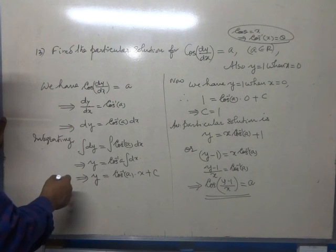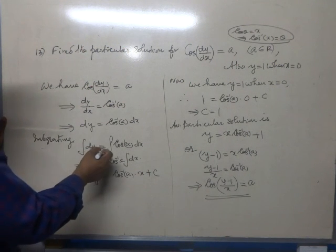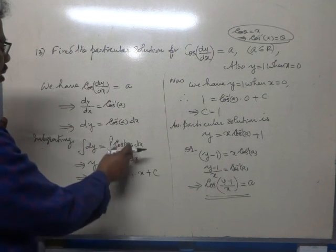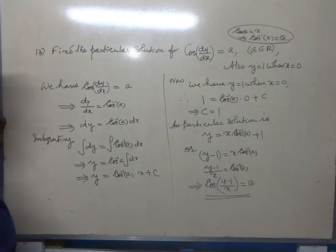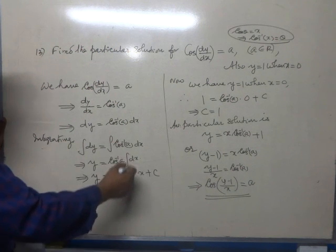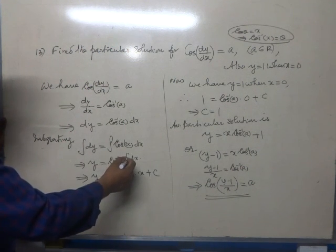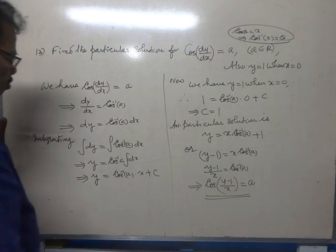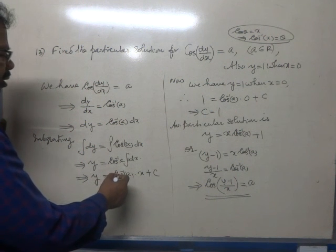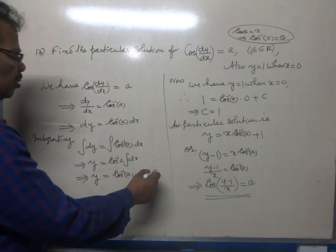We shall integrate both sides. Integrating, dy is equal to integral cos inverse a dx. Cos inverse a can be taken out, and we integrate 1 dx. On the left it is y, y is equal to cos inverse a into x plus c.